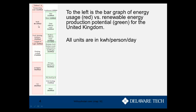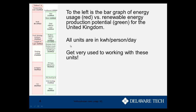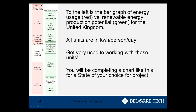All units are in kilowatt hours per person per day. The author gets a little lazy and sometimes just writes 'kilowatt hours per day,' but it really is kilowatt hours per person per day. You need to get used to these units because you'll be calculating many things in them. You'll be creating a chart like this for a state of your choice for Project 1, and the main idea is to see whether that state has enough sustainable energy production potential to satisfy its energy usage.